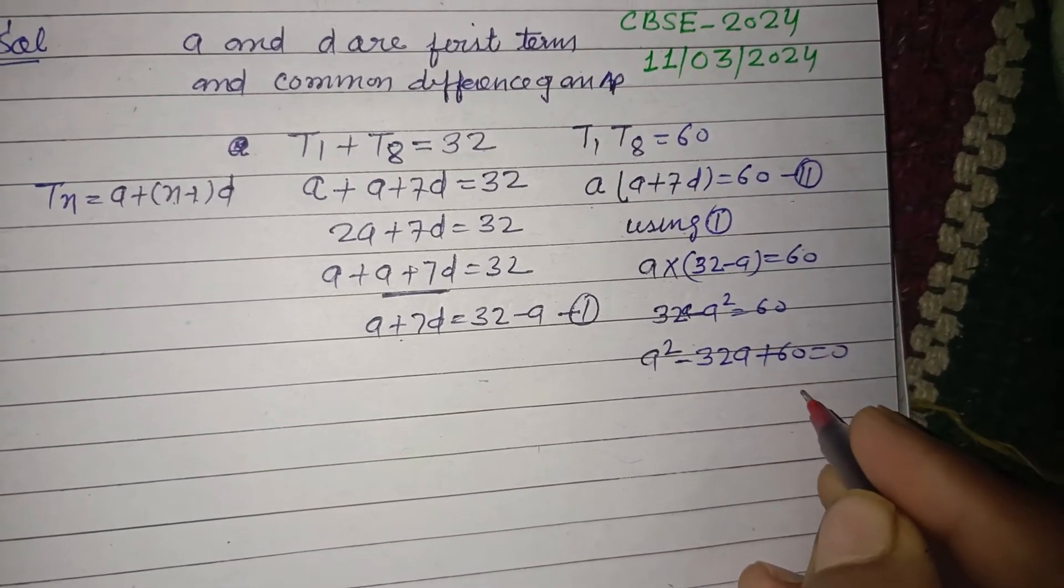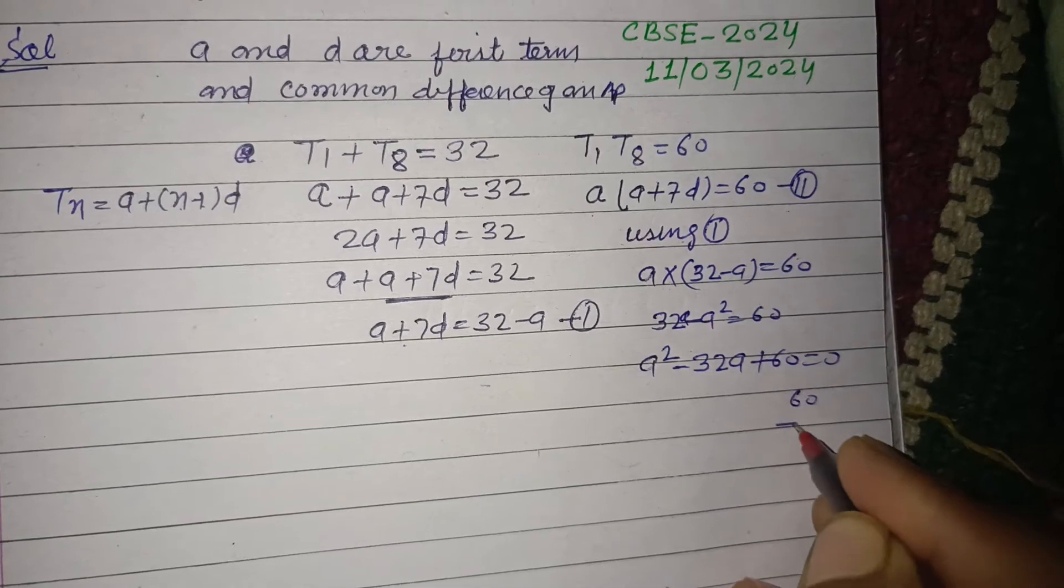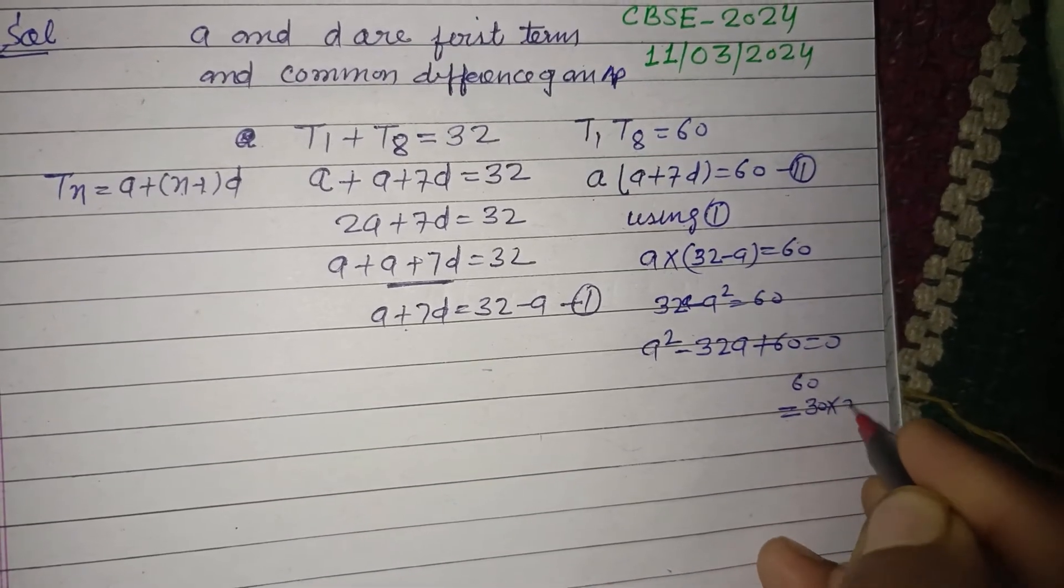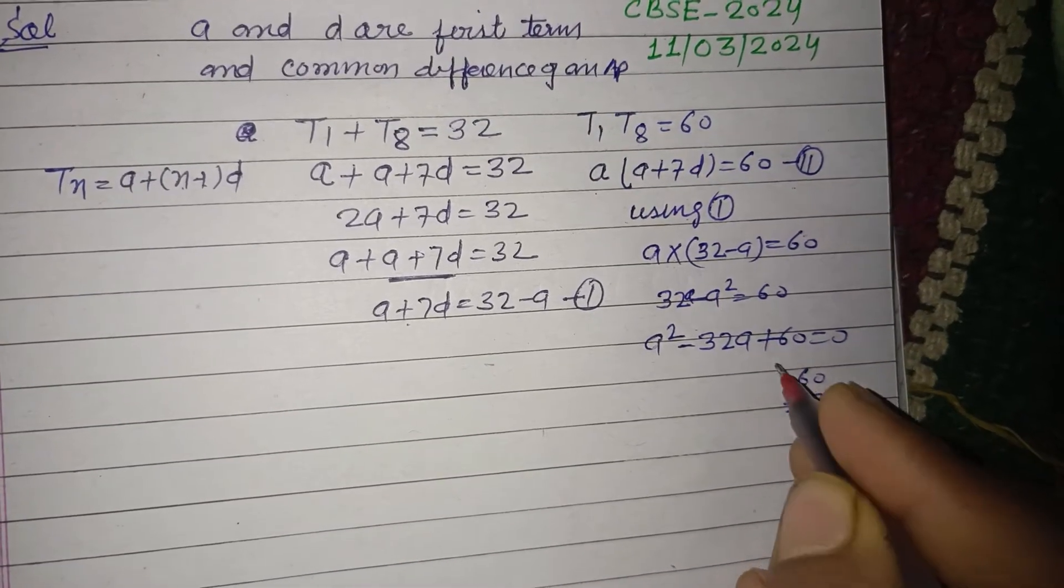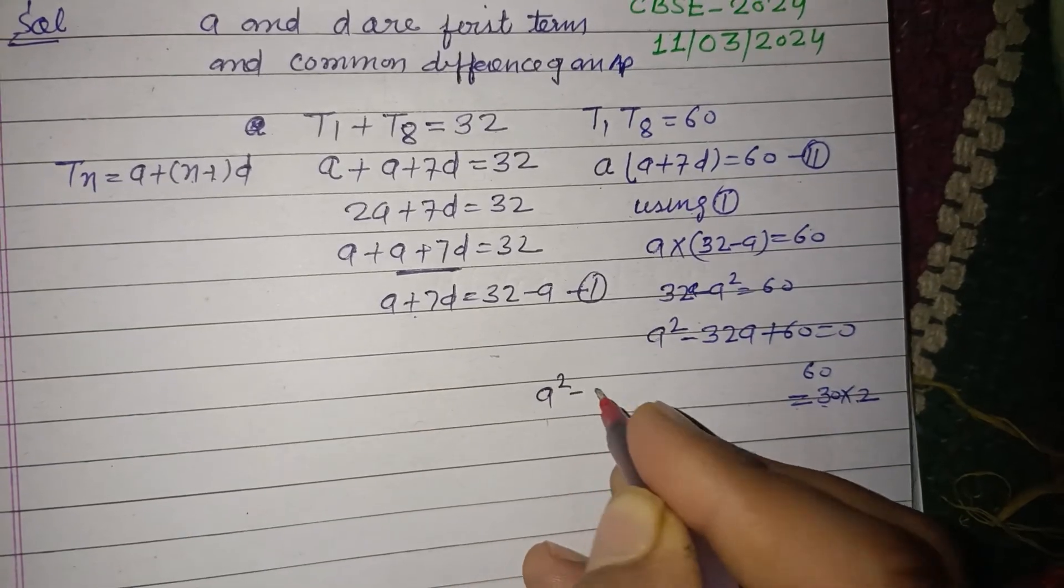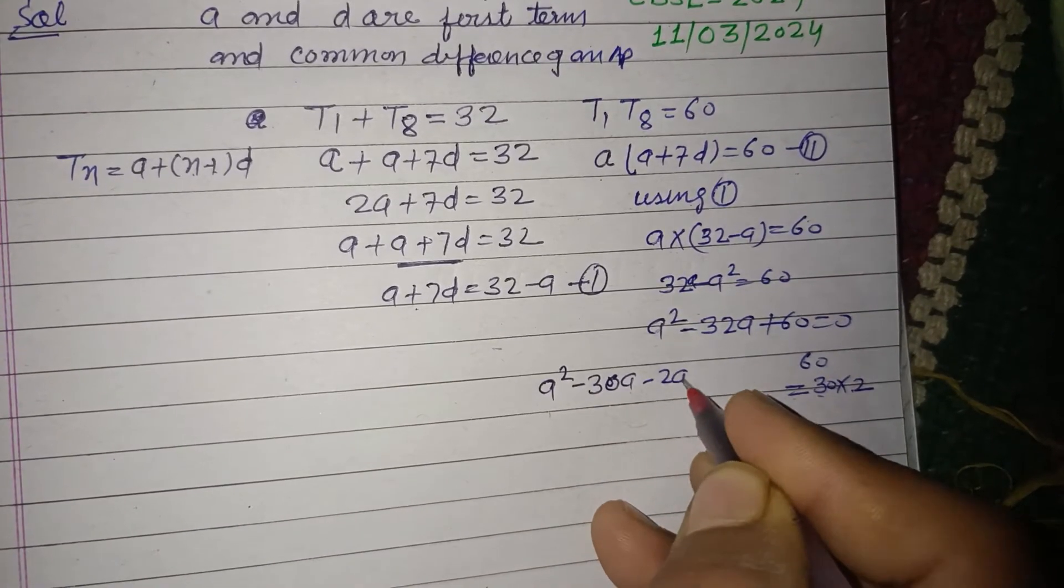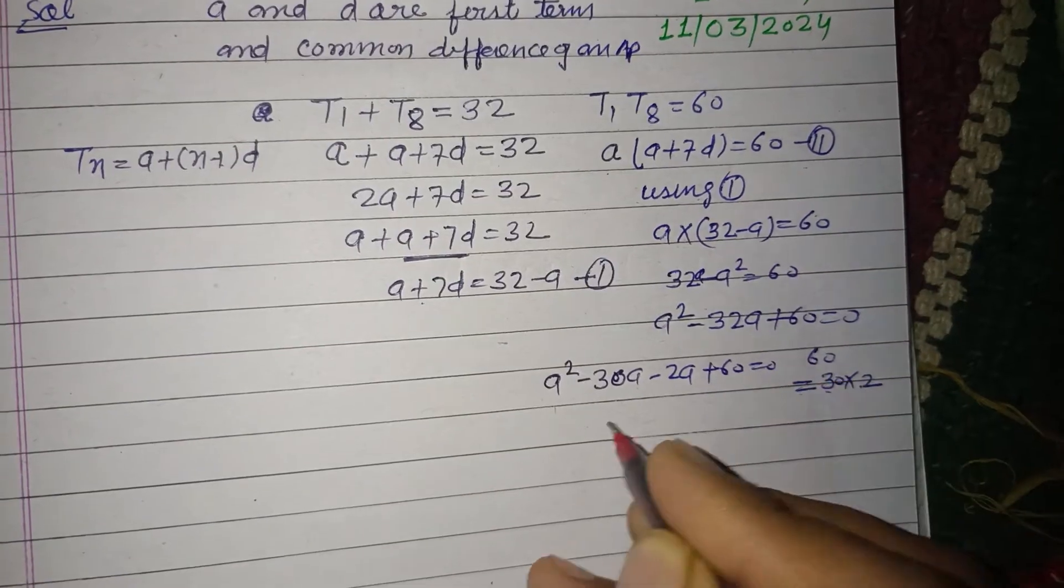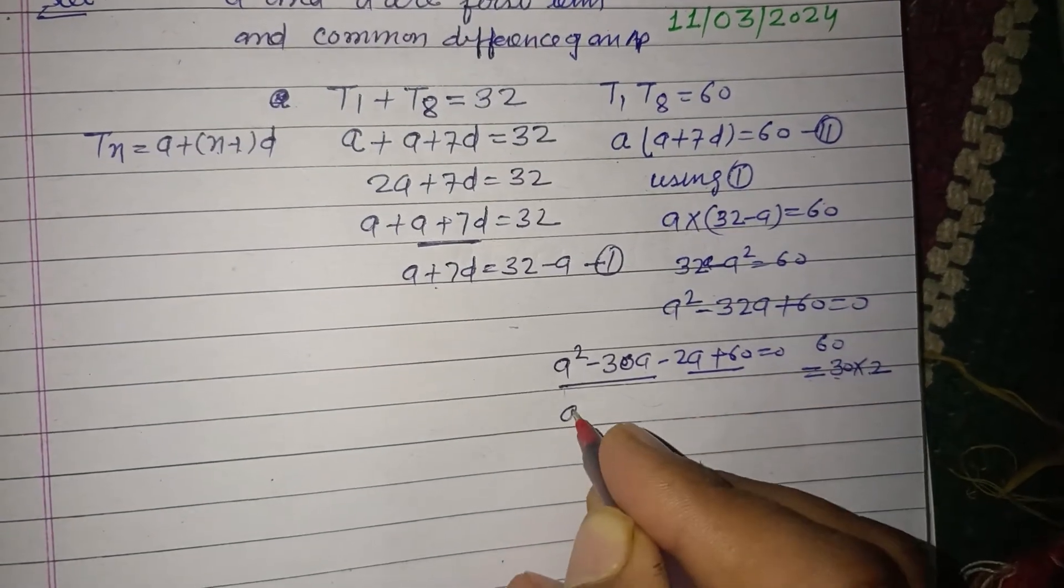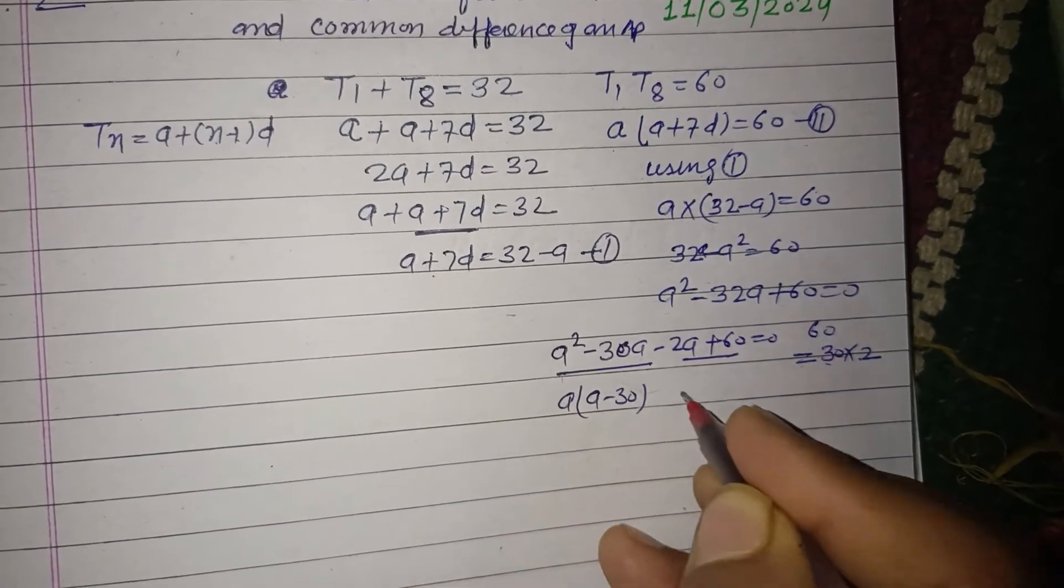60 can be written to get 32. This is 30 into 2, so 30 plus 2 is 32. So a squared minus 30a minus 2a plus 60 equals 0. From here a is common, giving us a minus 30 or a minus 2 equals 0.